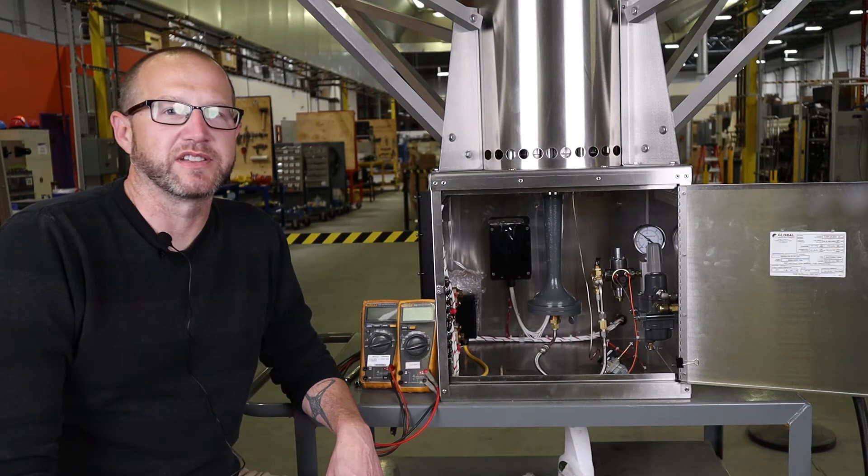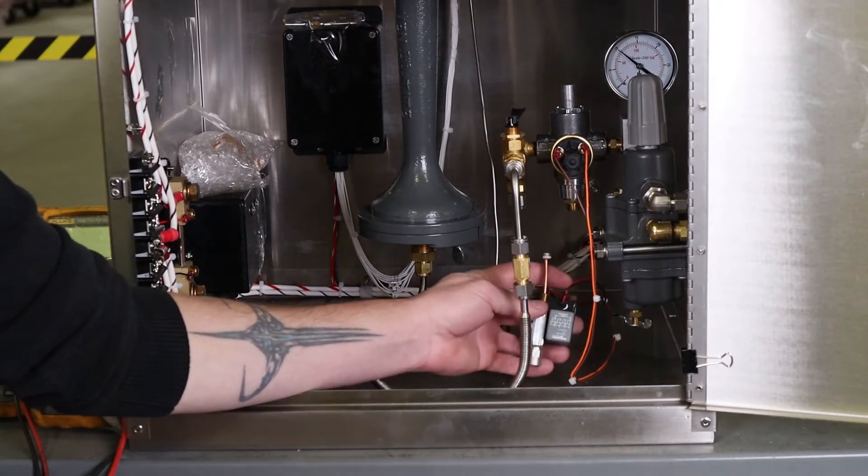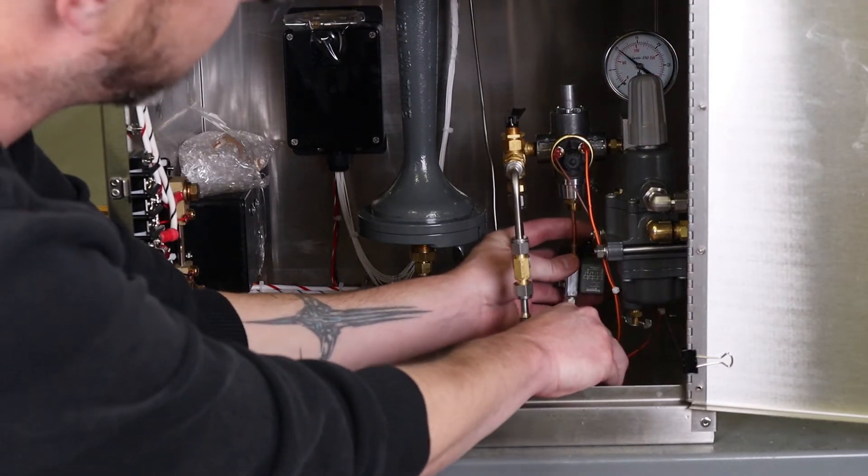Next we'll install the shutdown relay assembly. We'll begin by using a 3/8 wrench and install the male end of the relay assembly into the bottom of the shutoff valve.